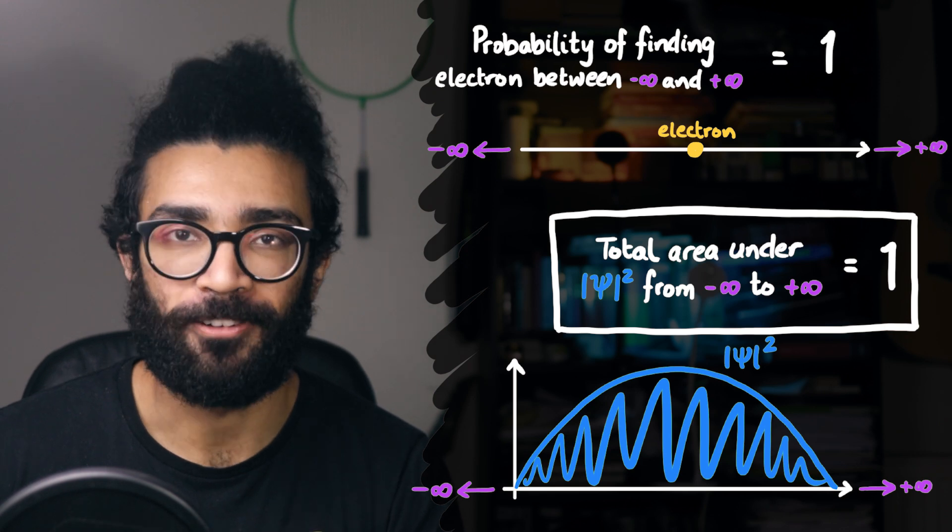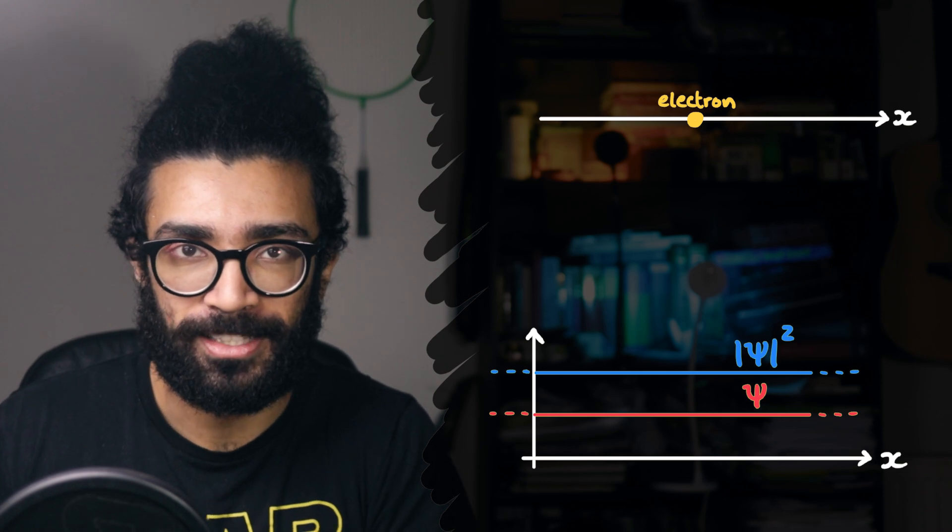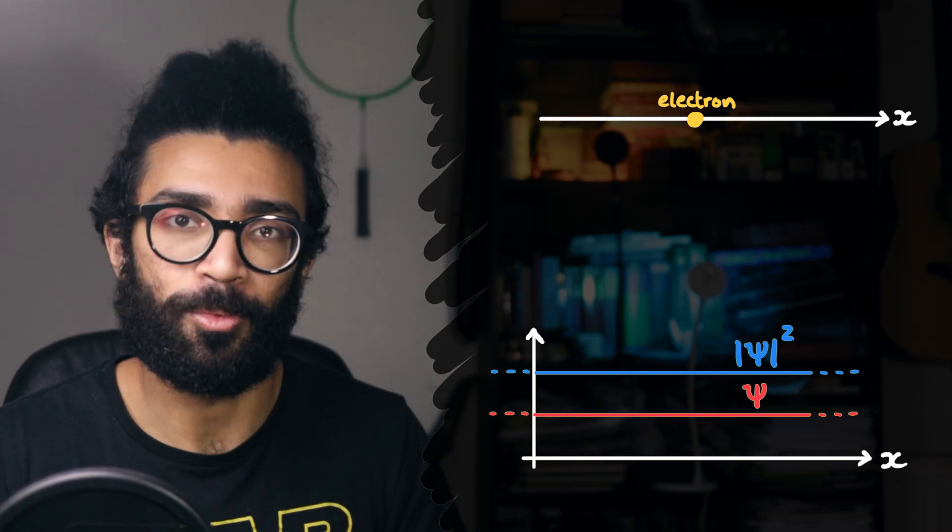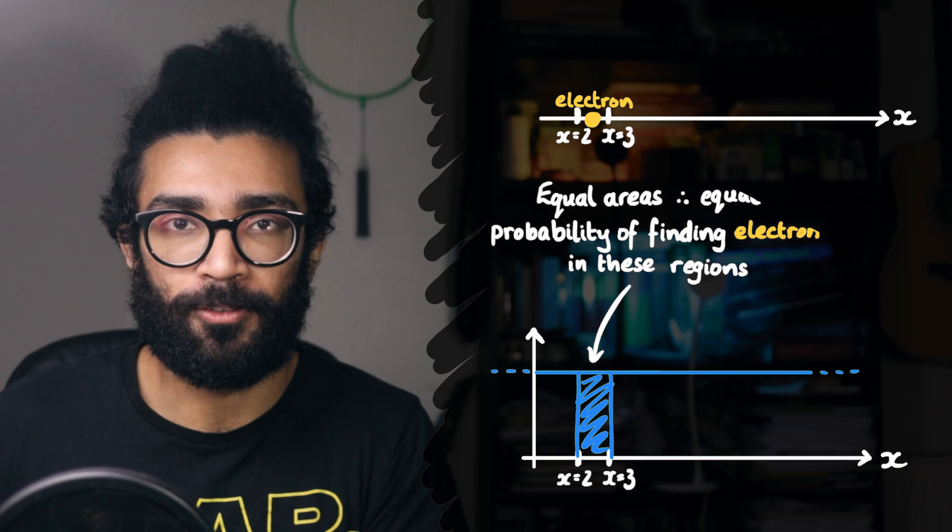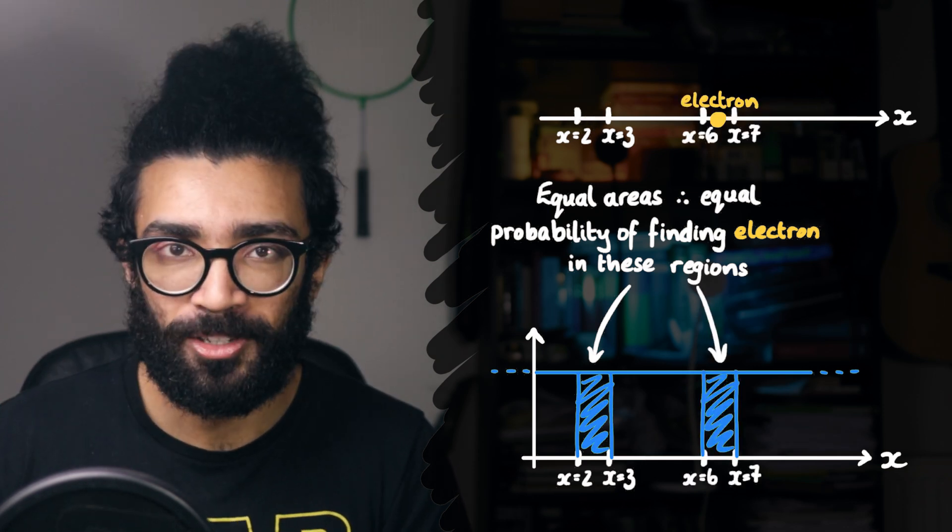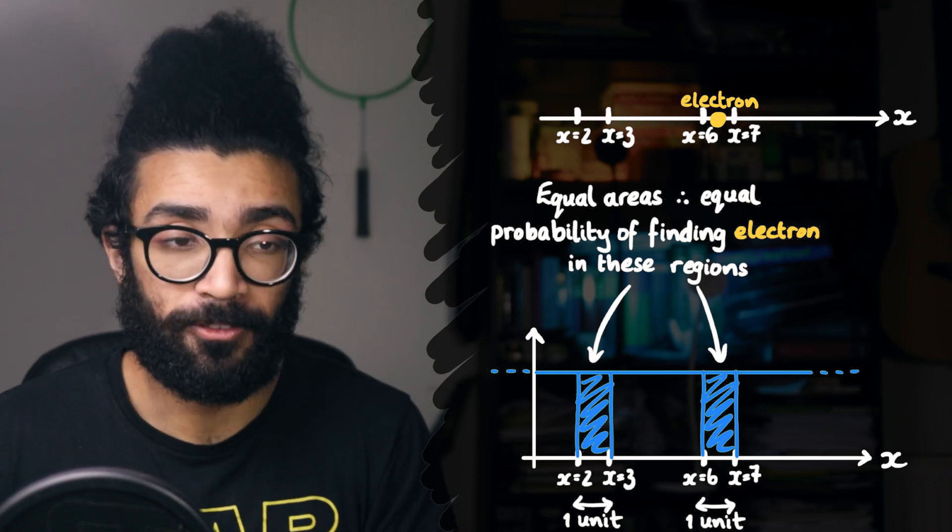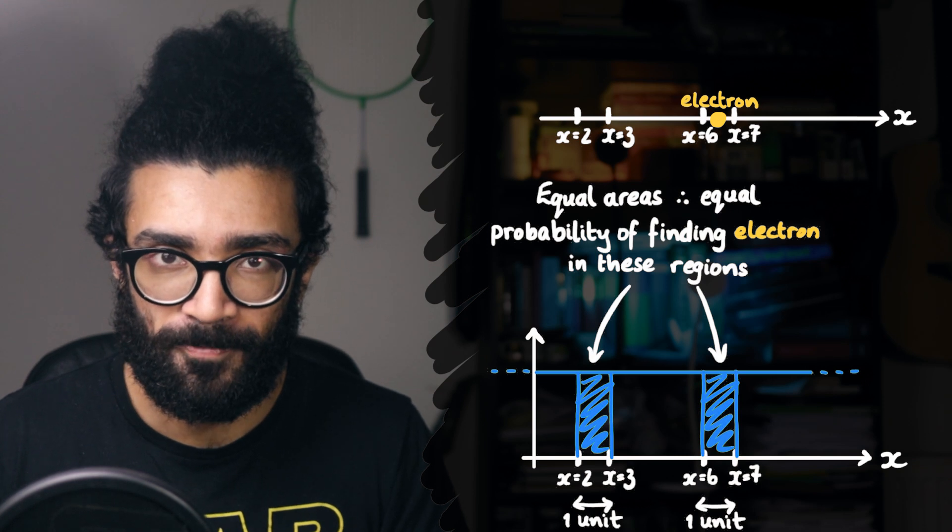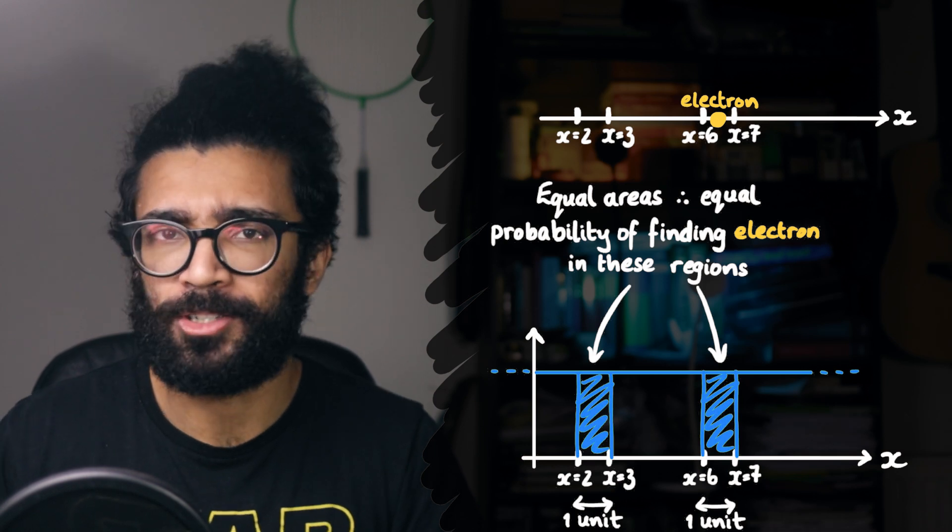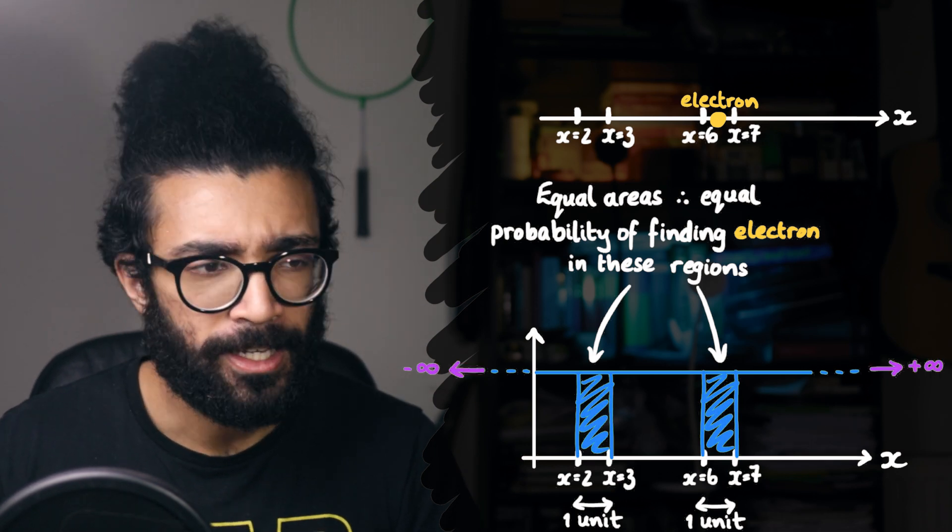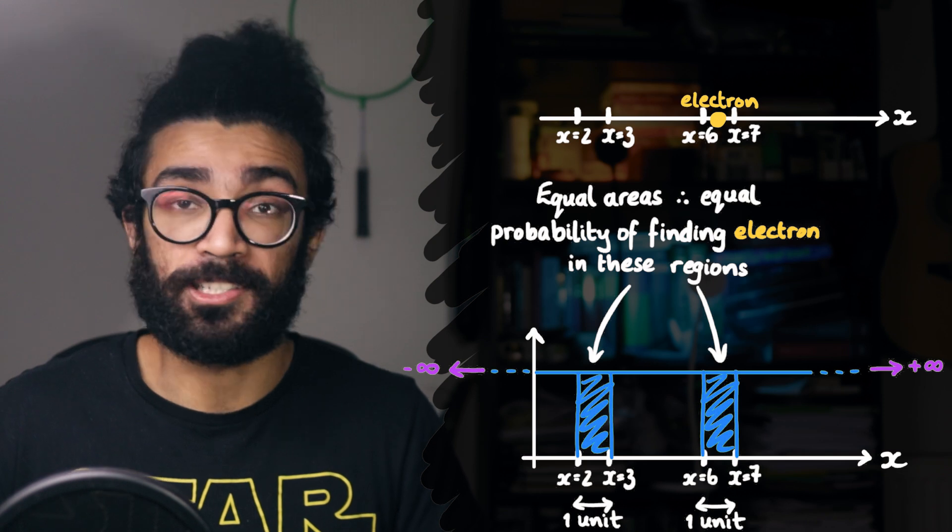For example, could we have a wave function that looks like this? A flat line. Well, when we square that wave function, we just get another flat line. And now what we're looking at is a wave function that represents an equal chance of finding our electron in this region, as we have of finding it in this region. Assuming, of course, those two regions are equally wide. So any two regions with the same width as each other, we have an equal chance of finding the electron in either of these regions. Seems pretty reasonable on the surface, right? Would this function work, though, if we assumed that it went on forever, from negative infinity to positive infinity? We have an equal chance of finding our electron anywhere in the entirety of the width of infinite space.